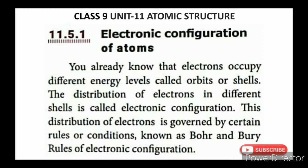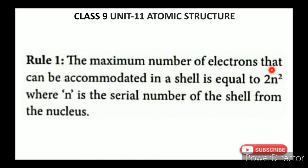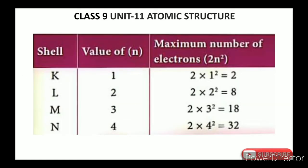Rule number 1: The maximum number of electrons that can be accommodated in a shell is equal to 2n², where n is the serial number of the shell from the nucleus. For example, the first orbit (K shell) has serial number n=1, so 2×1²=2. The first orbit can hold a maximum of 2 electrons.